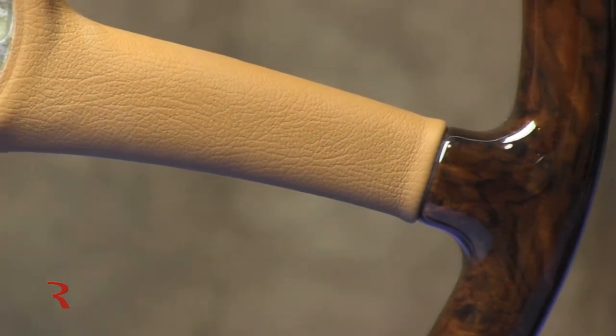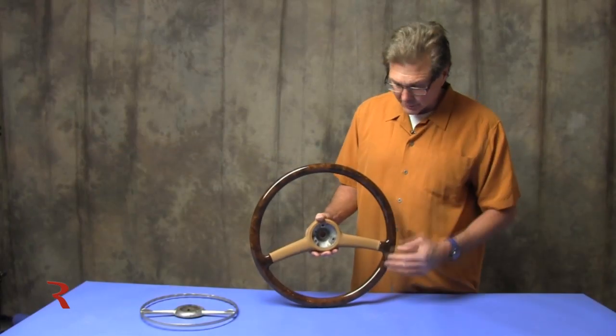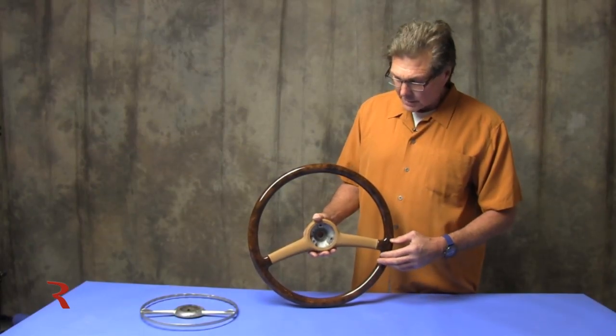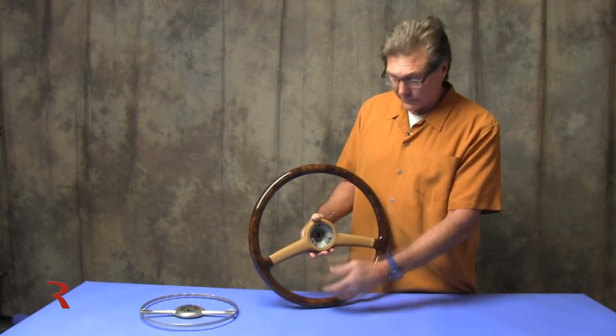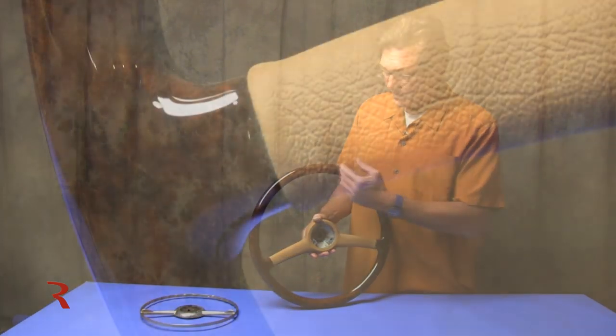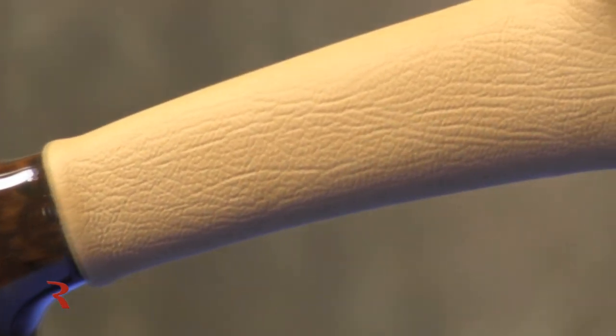It's a complete walnut burrow wheel, and it's a bookmatch of consecutive leaves. So we have left and right symmetry on the front, and on the back of the wheel.